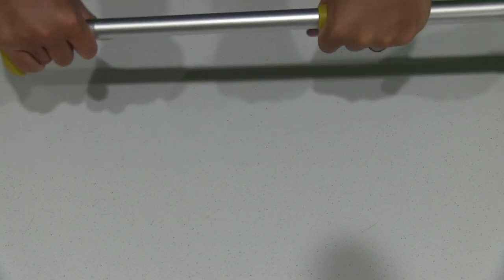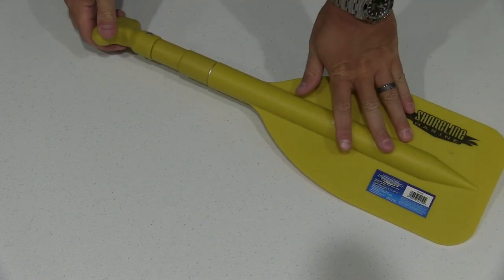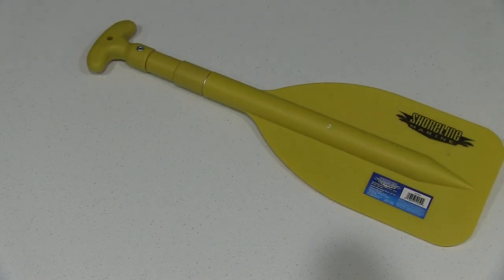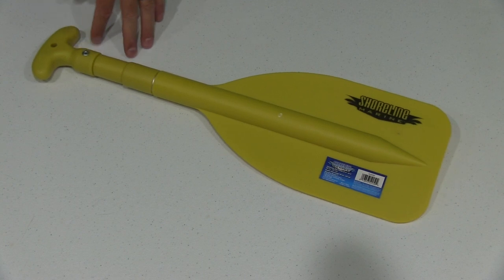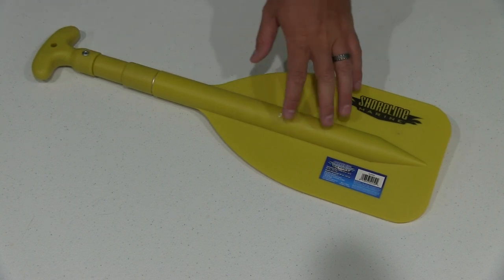Now what I like about this as opposed to a wooden oar is that when you're not in an emergency situation, it folds up very compactly as you can see there. So you can store below your deck wherever you want to on your boat.